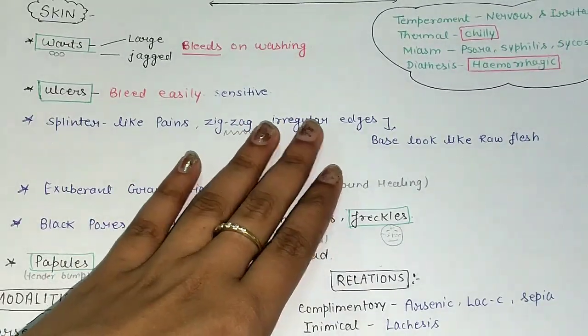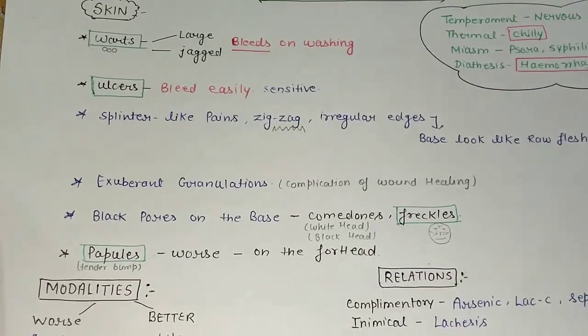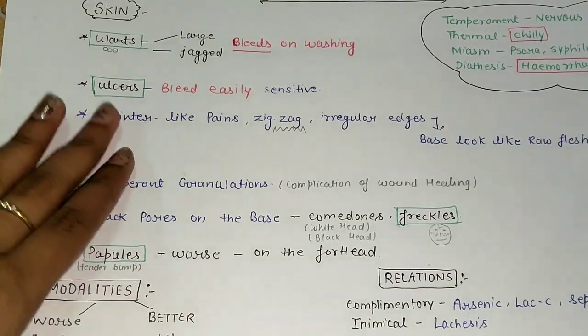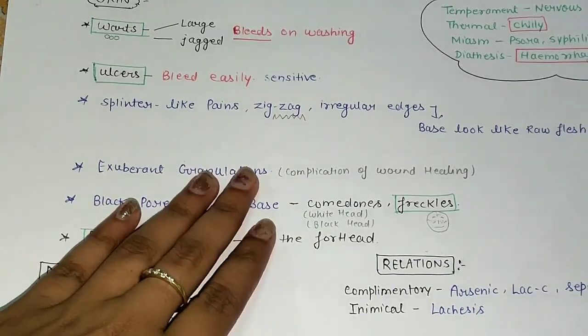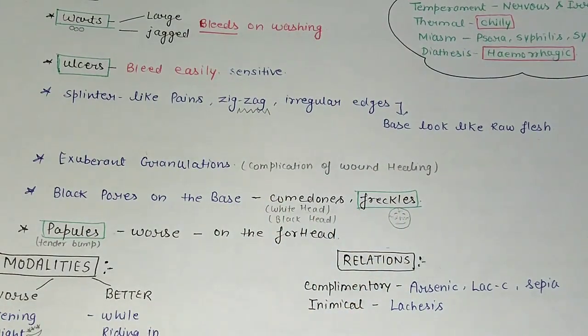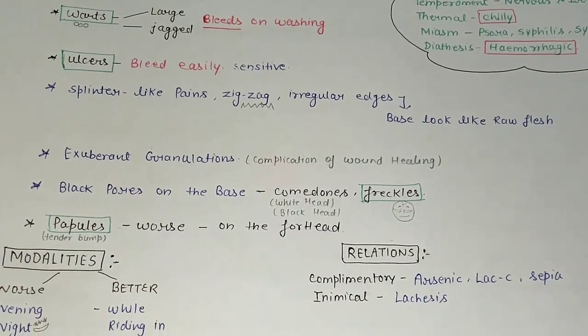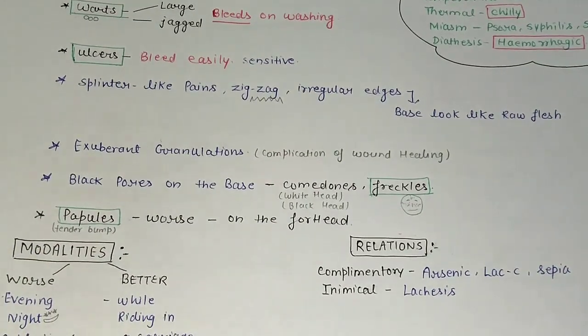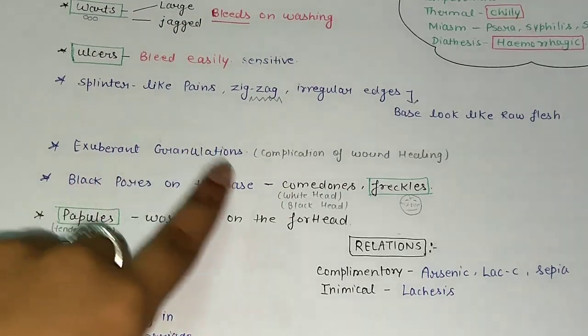We can think about Nitric Acid - splinter-like pain we have to remember. The pain in Nitric Acid is exuberant granulation. That means it is a complication of wound healing. Exuberant granulation is the granulation tissue which has more accumulation. This is the complication of wound healing, which is keloid, which is the complication of wound healing. Black pores on the base - comedones and freckles.